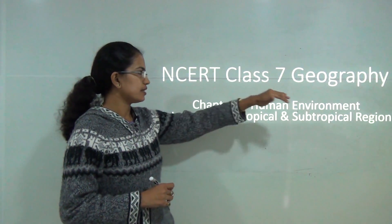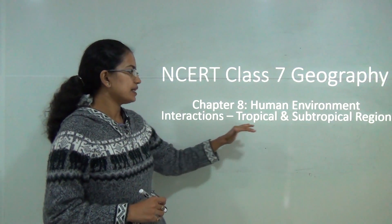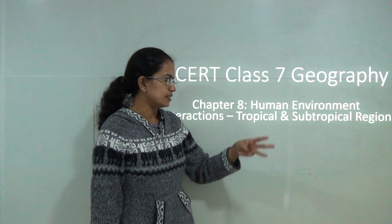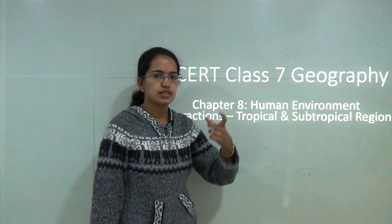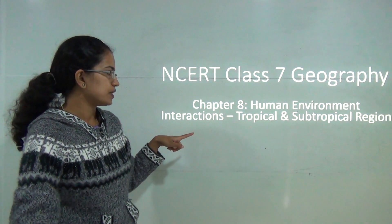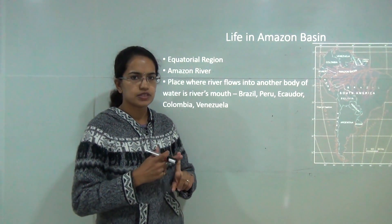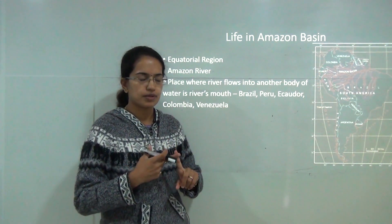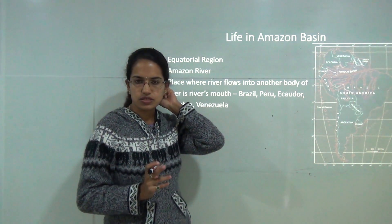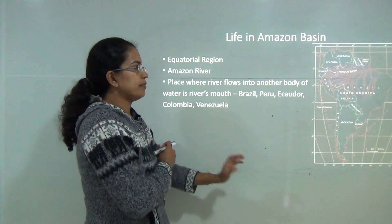Welcome. We will start with Chapter 8 for Class 7 Geography, that is Human Environment Interactions, mainly focusing on the tropical and the subtropical region. The next 3 chapters follow on a regional basis, and Chapter 8 is mainly focused on 2 regions: the Amazon basin and the Ganga-Brahmaputra basin. The NCERT book has a case study of these 2 regions, and we will be focusing primarily on these for the coming lectures.